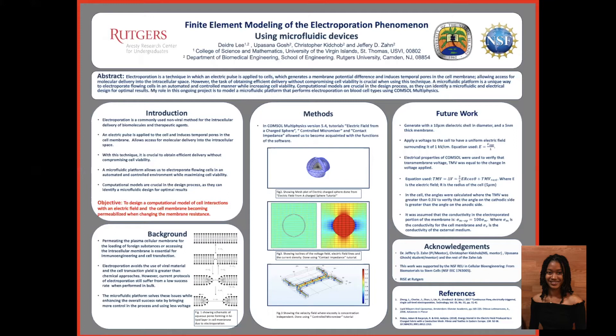Electroporation is a technique which involves applying an electric pulse to the cellular membrane, and this induces a potential difference in the membrane, making these temporal pores, as seen in figure one. You see the straight phospholipid bilayer, the voltage is applied, and it starts to split and cleave, and forms these pores, which are intended to be reversible. After the electric pulse is applied, the pores are formed, and molecules pass through.